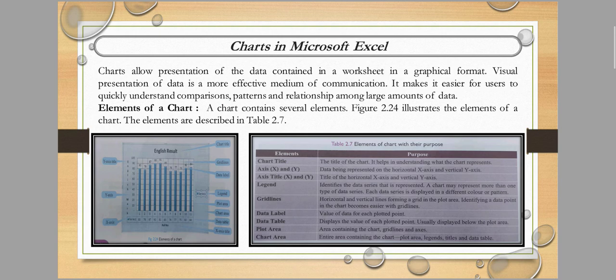Each data series is displayed in different colors or patterns. For example, in a chart with multiple data items, one may be shown in blue, another in green, another in yellow — so we can tell which color represents which data. Next are grid lines: horizontal and vertical lines forming a grid in the plot area, making it easier to identify data points in the chart.